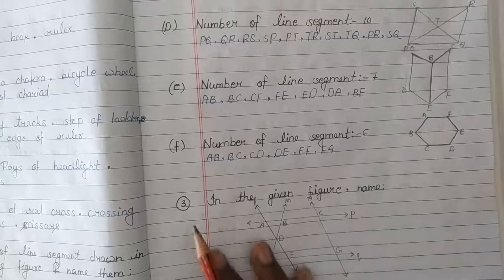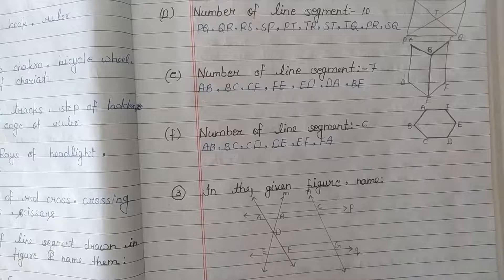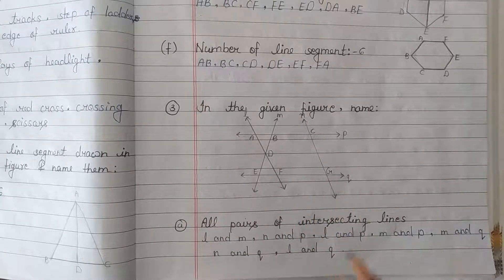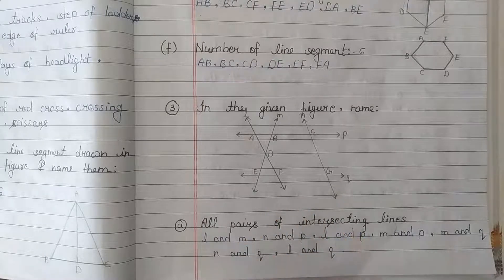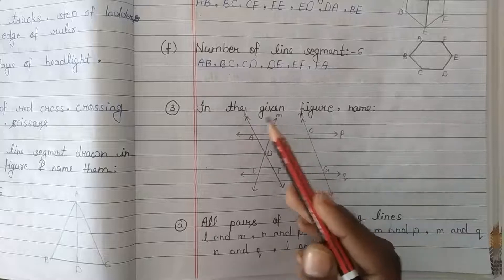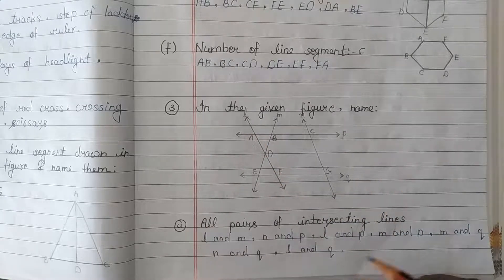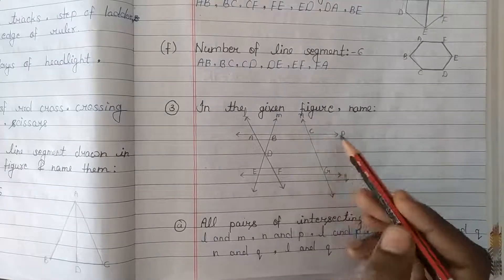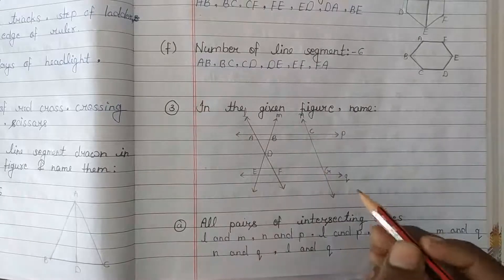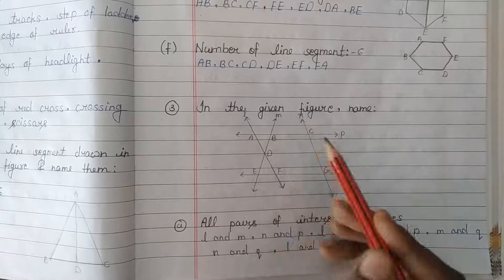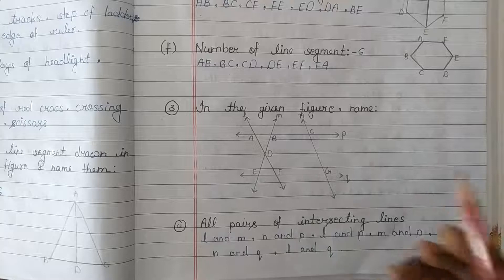Next, question number 3. In the given figure, name all pairs of intersecting lines. So we have lines L and M — that is the first pair of intersecting lines. Second, line P intersects both L and M, giving pairs LP and MP.